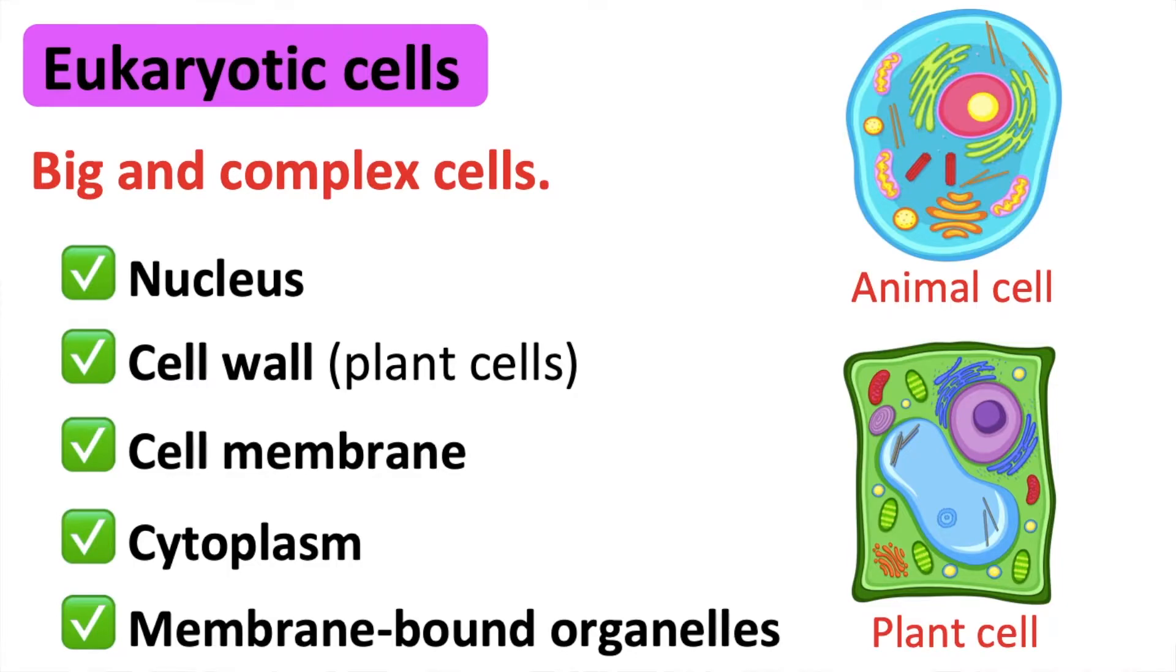Animals and plants are examples of eukaryotes. Eukaryotes can be unicellular or multicellular organisms.